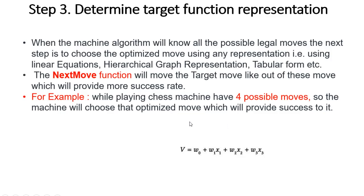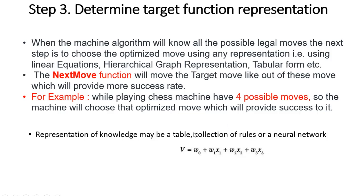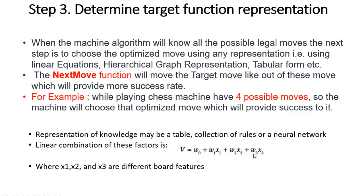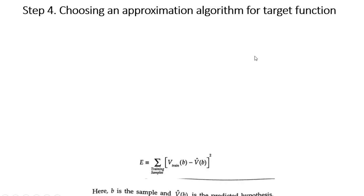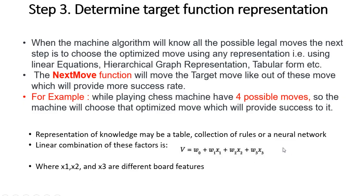Choosing the optimized move can be done in many ways — in the form of a table, by giving rules, writing a function, using tabular form, or using linear equations as shown here. This linear equation has x1, x2, x3 as different board features and w0, w1, w2, w3 as the weights. We write a target function in step 3 which will choose the optimized move for the game of chess.